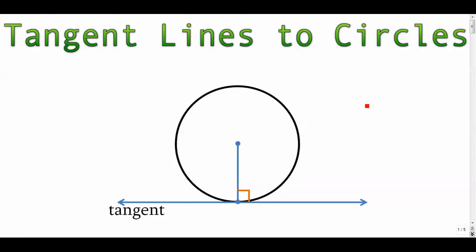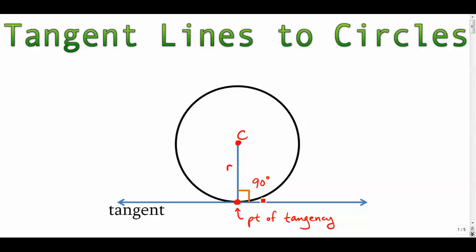Let's talk about tangent lines to circles. First and foremost, the center is the most important point. From there you have your radius, which is the distance from the center to any point on the circle. A tangent line touches the circle at exactly one point — one and only one point — and that point is called the point of tangency. Tangents are perpendicular to the radius at the point of tangency.